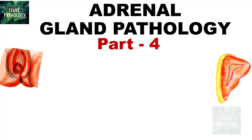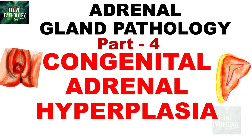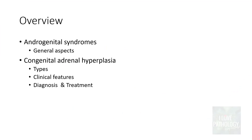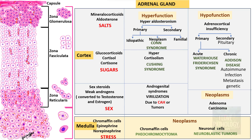Hi everyone, welcome back to this short tutorial from Pathology Made Simple at ilawpathology.com. This is part 4 of the Adrenal Gland Pathology series. In this section, let's learn about congenital adrenal hyperplasia. In the next 10 to 15 minutes, we will be looking at what androgenital syndromes mean, and then in detail about congenital adrenal hyperplasia — the types, clinical features, morphology, diagnosis, and treatment.